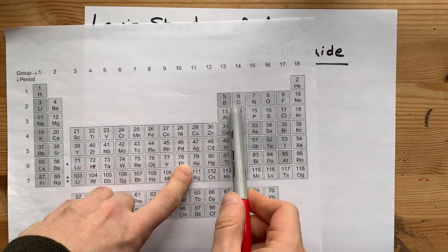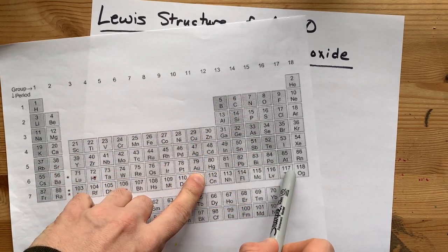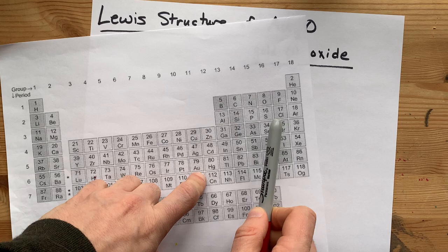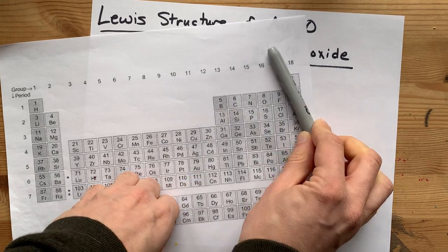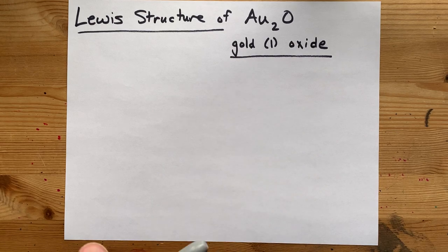and I know it's a metal because it comes from the left-hand side of this staircase on all periodic tables, and oxygen, a non-metal, because it's on the right-hand side of that staircase, bonding together.